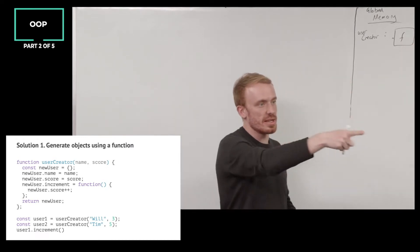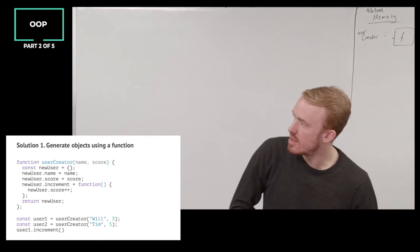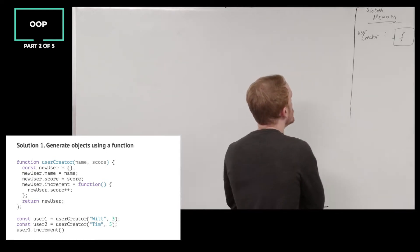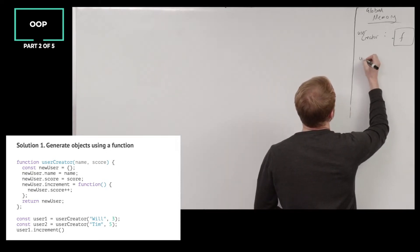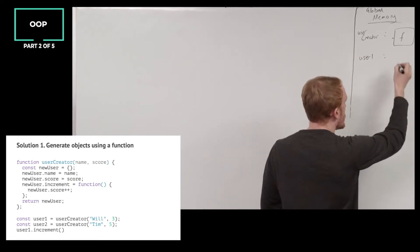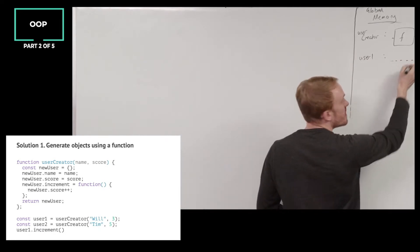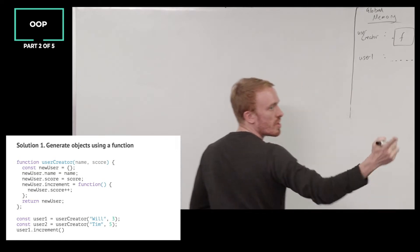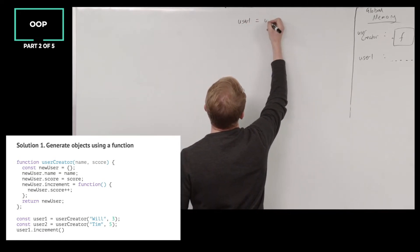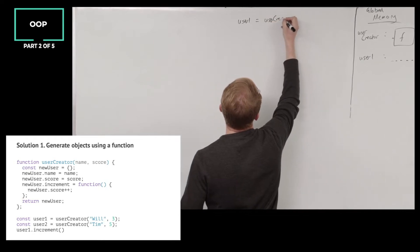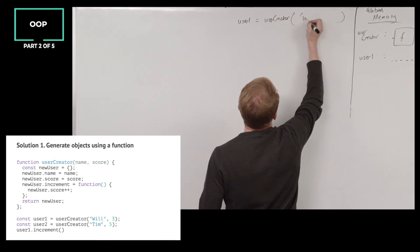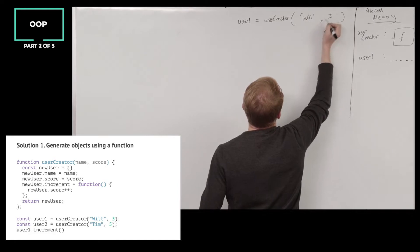Next line: we are declaring a variable called user1. Do we know what's going to be stored in it yet? Undefined - because it's going to be the return value of calling userCreator. User1 will be the return value of calling userCreator with what arguments? Will and 3.